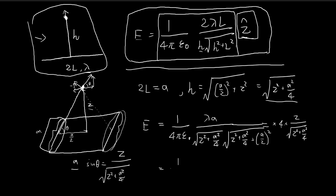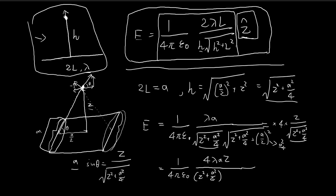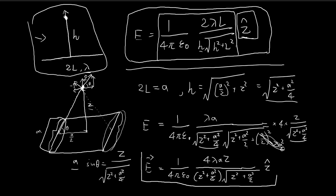So we're essentially done — we just need to arrange things more neatly. The constants pile up to give 4λaz. The two square root factors multiply together to give (z² + a²/4), and the remaining a²/4 combines with that to give a²/2. So the full expression has √(z² + a²/2) in the denominator. The electric field points in the upward z-direction, and this is your final answer.